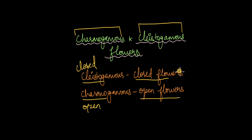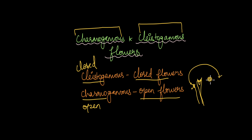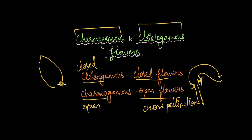Open or chasmogamous flowers have exposed anthers and exposed stigmas, which means pollen grains can be transferred to another plant and the stigma can also receive pollen from another plant — this ensures cross-pollination. Closed or cleistogamous flowers are flowers that do not bloom at all; they have the anther and stigma located very close to one another, so the pollen grain from the anther will land only on the stigma of the same flower — this is pure autogamy.